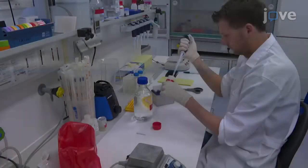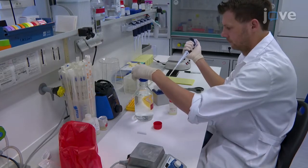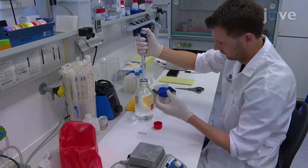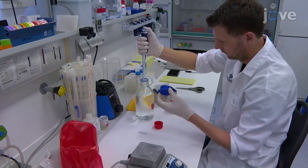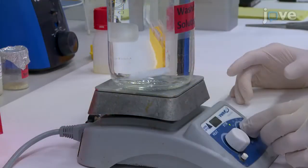To prepare the washing solution, which is 0.05% tween 20 in PBS, add 500 microliters of tween 20 to 1 liter of PBS and mix vigorously.